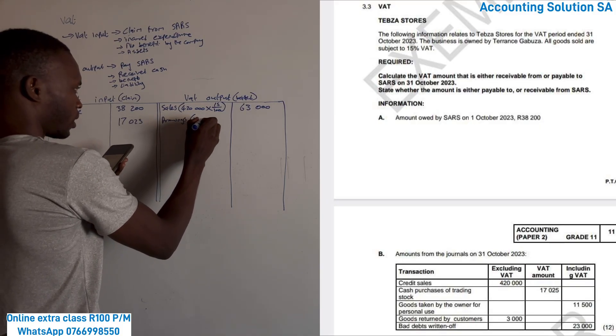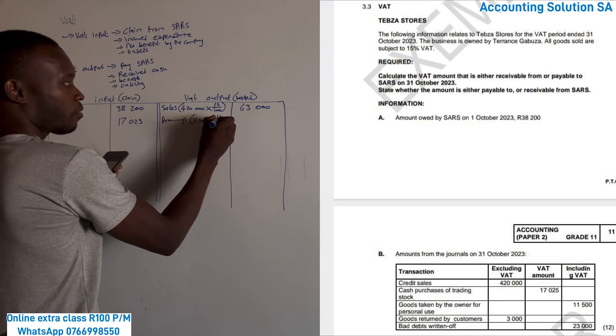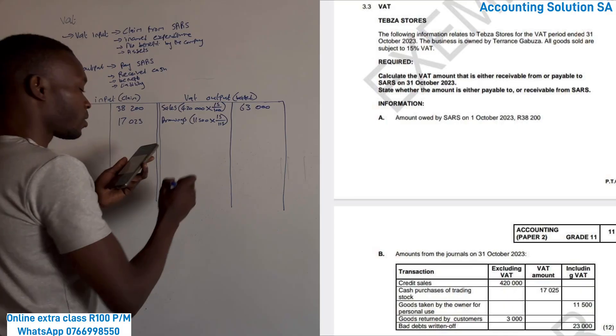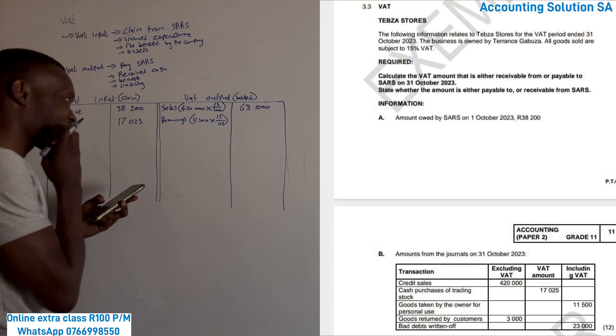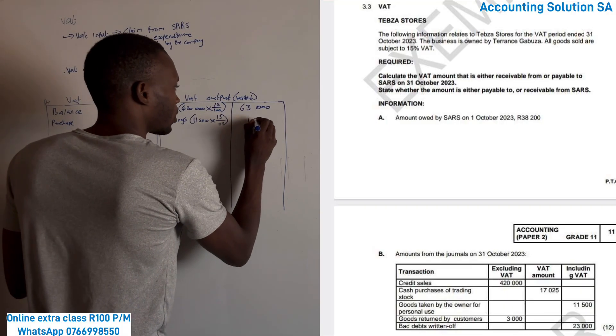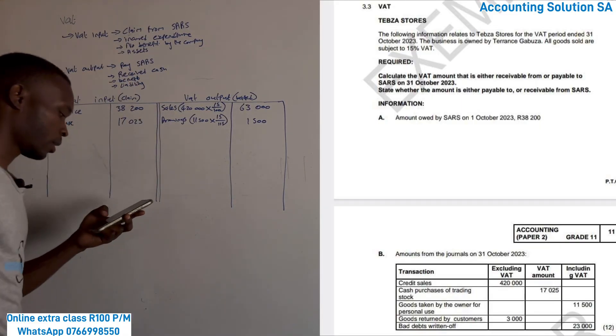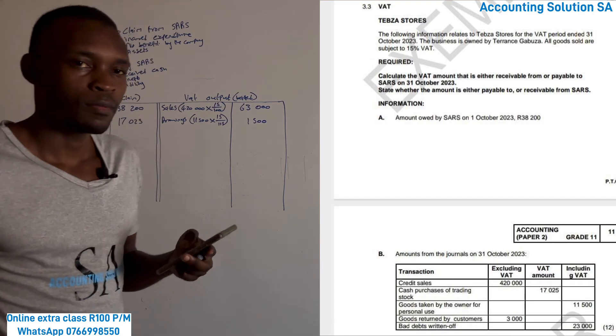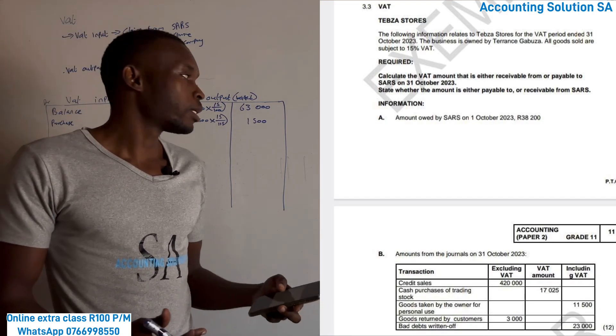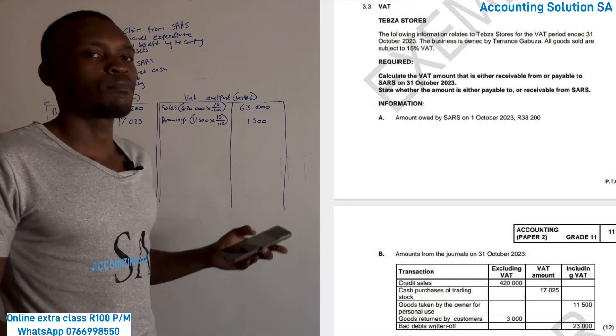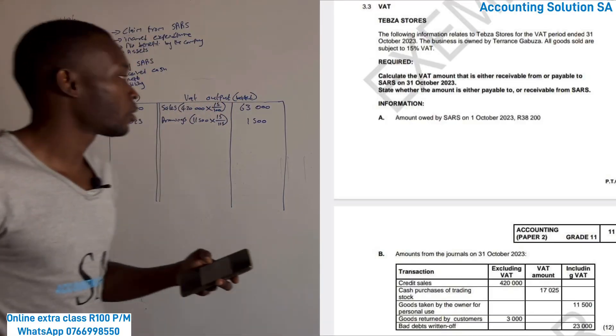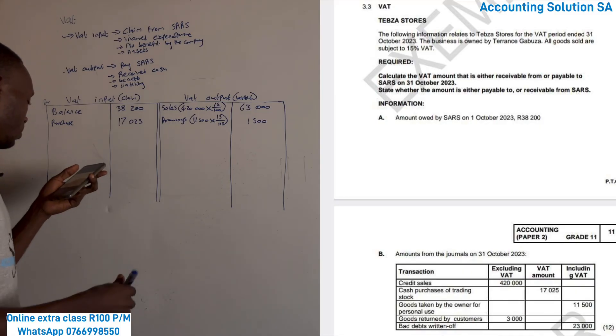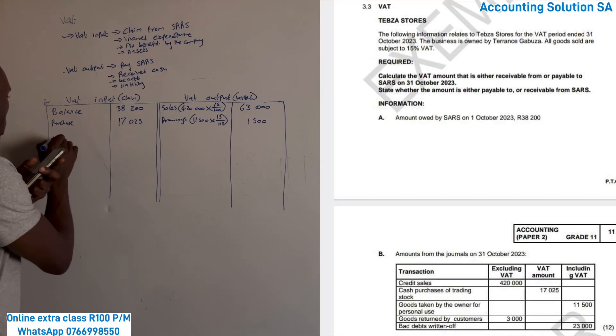11,500. We have to say 15 over 115. Why 115? Because we take it from inclusive column. It's going to give us 1,500. Goods returned by the customer. A customer buys goods, yes we said we benefited. But now the customer returns goods, we didn't benefit because he returned and we give him his money. Which means a return, it will come this side.